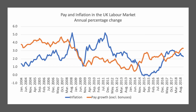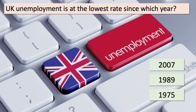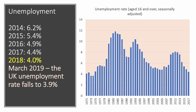Now, what about jobs — about the rate of unemployment? There is some quite significant news as you head towards your exams. Here's a multiple choice question: UK unemployment is at the lowest rate since which year — is it 2007, 1989, or 1975? Press the pause button, have a think, and then come back. The answer is: the UK unemployment rate is currently at its lowest rate since 1975.